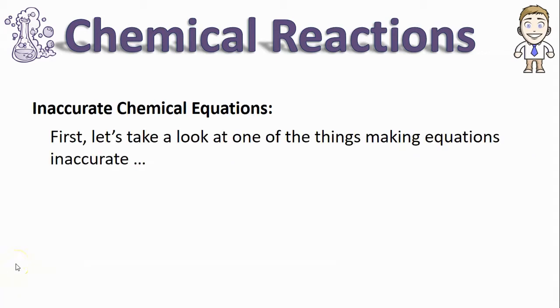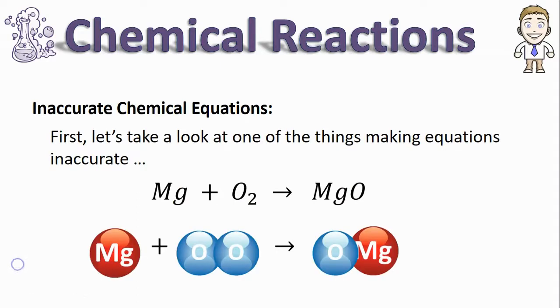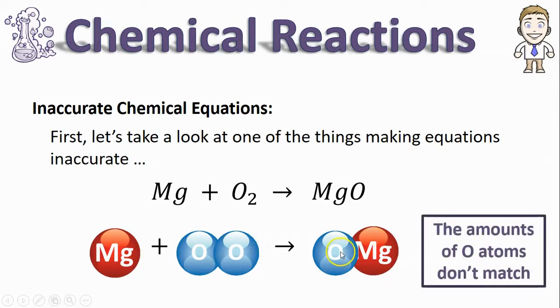So let's start off by taking a look at one of the things that makes equations inaccurate in the first place. A good example of this is Mg plus O2 turns into MgO. If you look at the more accurate particle model version of this you might notice immediately that something's wrong here. On the reactant side I start with two oxygen atoms but on the product side I've only got one. The amounts of oxygen atoms don't match.